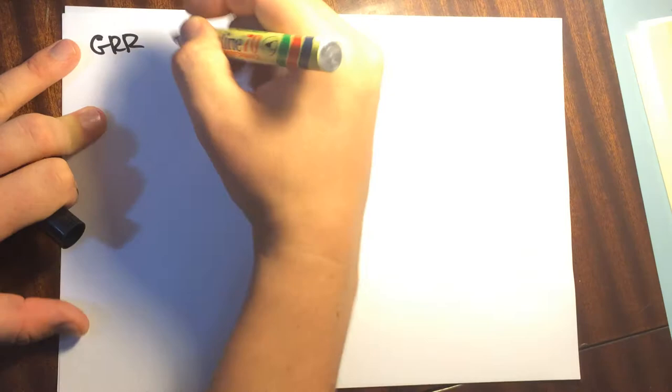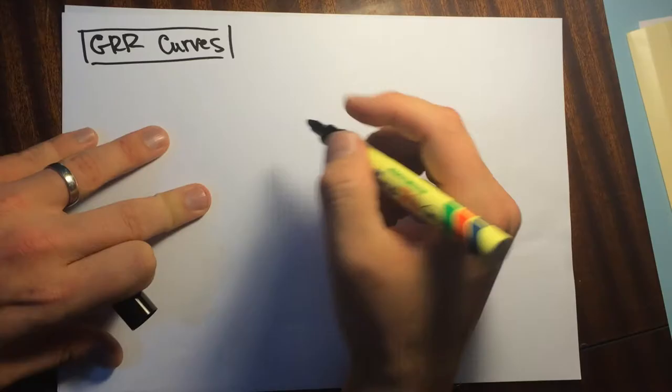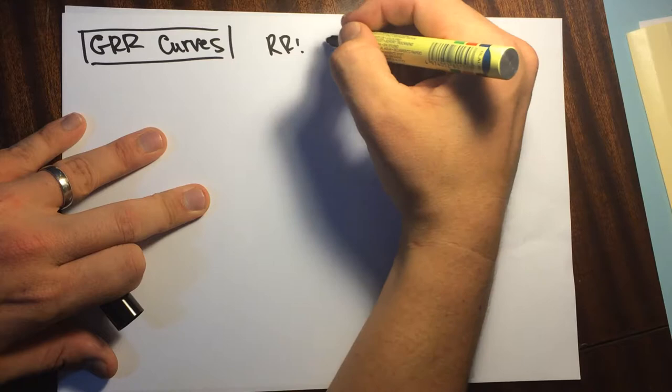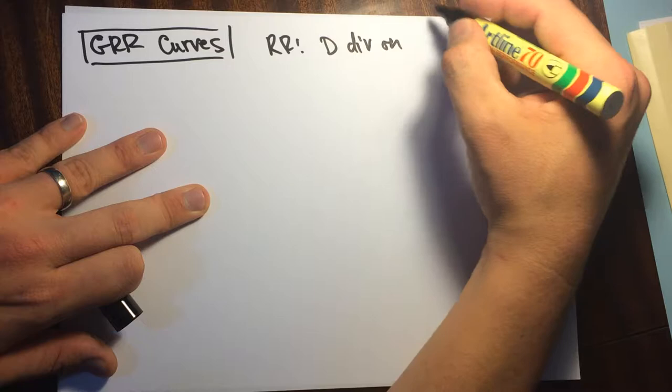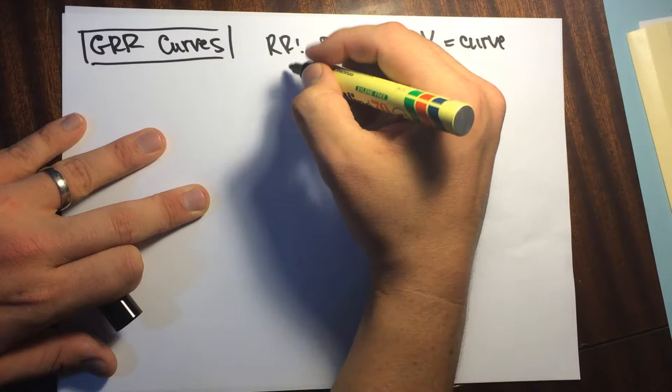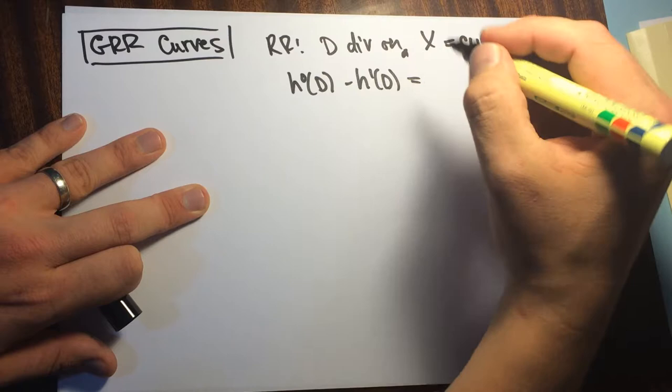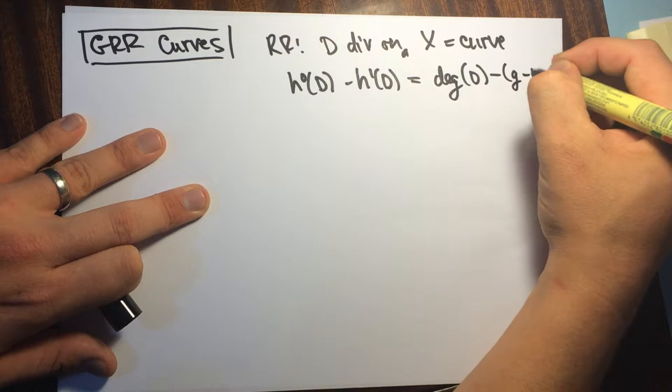I'm going to do a rapid-fire account of Grothendieck-Riemann-Roch for curves to make sure that we get our usual Riemann-Roch formula. Recall that the classical Riemann-Roch formula says that if we have a divisor on a curve X, then it says that H0 of D minus H1 of D is equal to the degree of D minus G minus 1.